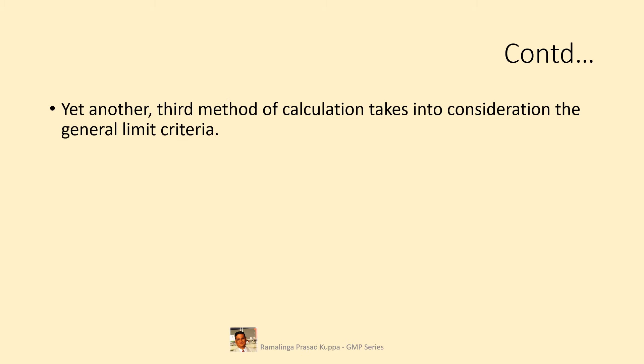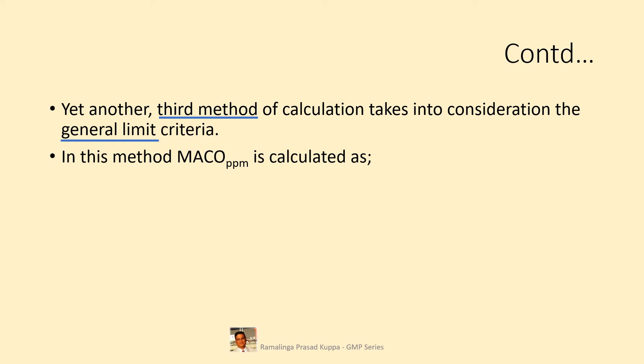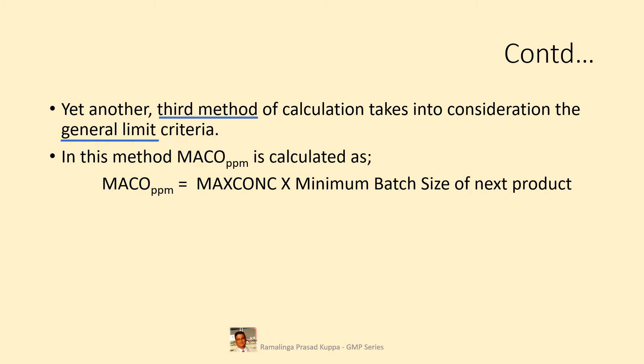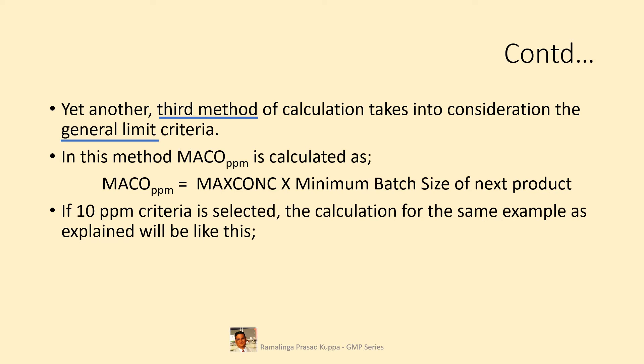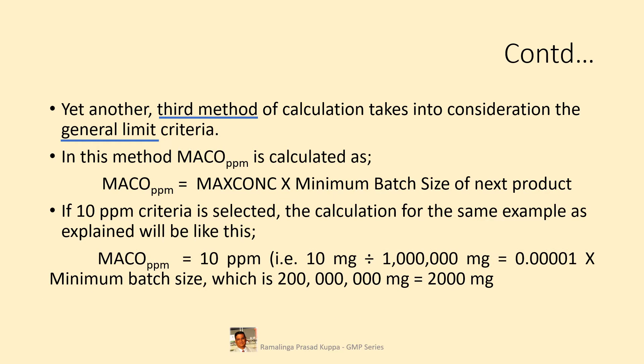There is yet another third method of calculation that takes into consideration the general limit criteria. In this method, MACO PPM is calculated as: MACO PPM equals maximum concentration multiplied by minimum batch size of the next product. If 10 PPM criteria is selected, the calculation for the same example will be: MACO PPM equals 10 PPM — the maximum concentration — that is 10 milligrams divided by 1 million milligrams, which equals 0.00001 milligrams, multiplied by the batch size of 200 kilos, which is 200 million milligrams. The MACO will be 2000 milligrams. It is very important to ensure the unit of measure is the same in all cases — in this case, milligrams.